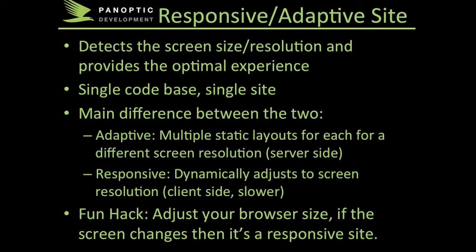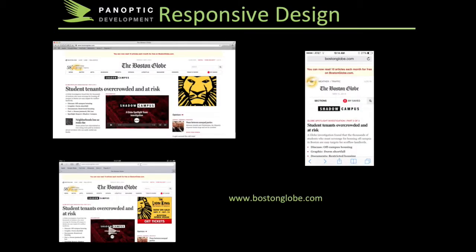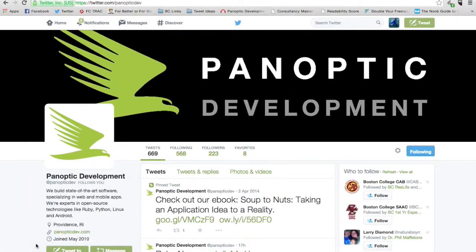With a responsive design, it actually dynamically adjusts to the screen resolution. This happens on the client side, so it is actually slower. But a fun little hack — if you actually change your browser window size, you'll see the website change dynamically in front of your eyes. An example of a responsive site is the Boston Globe, and as you can see here, the desktop and tablet are very similar, but when you go to mobile, the layout is much different. I'm going to show you that fun little hack in a minute.